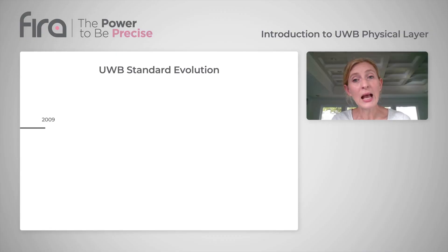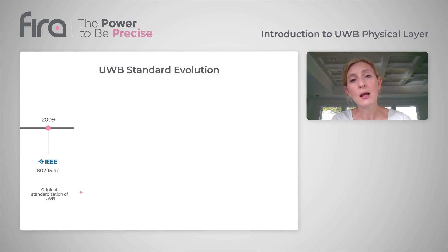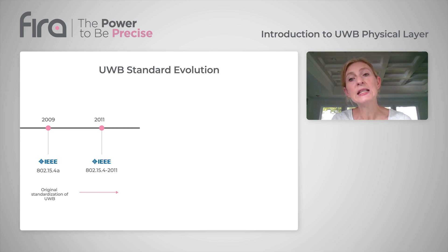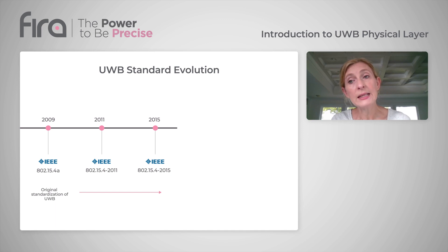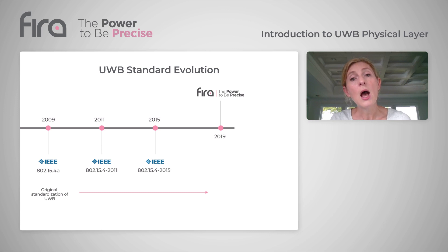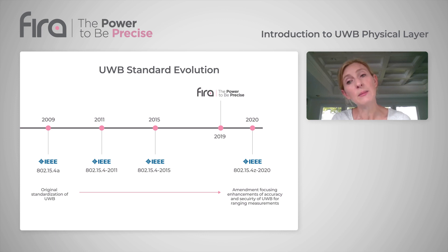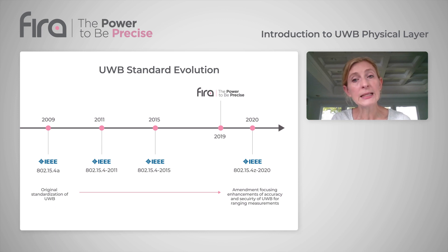Let's start by looking at the standards defining UWB. UWB is an impulse radio technology, and its PHY and MAC layers were originally defined in the IEEE 802.15.4a standard. More recently, the 802.15.4z amendment has focused on enhancements to increase the accuracy and security of UWB for ranging measurements.